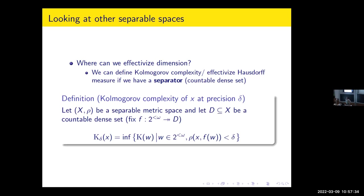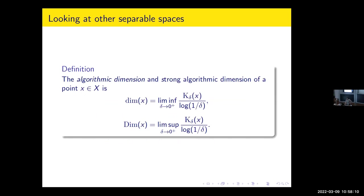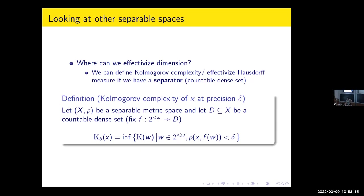The Kolmogorov complexity of point X at precision delta is the shortest description of a point in D in the delta-ball of X. Once you have that, it's immediate to get an effectivization. Of course, there are advantages to both types of effectivization — gambling and Kolmogorov complexity — and we may mention them later.